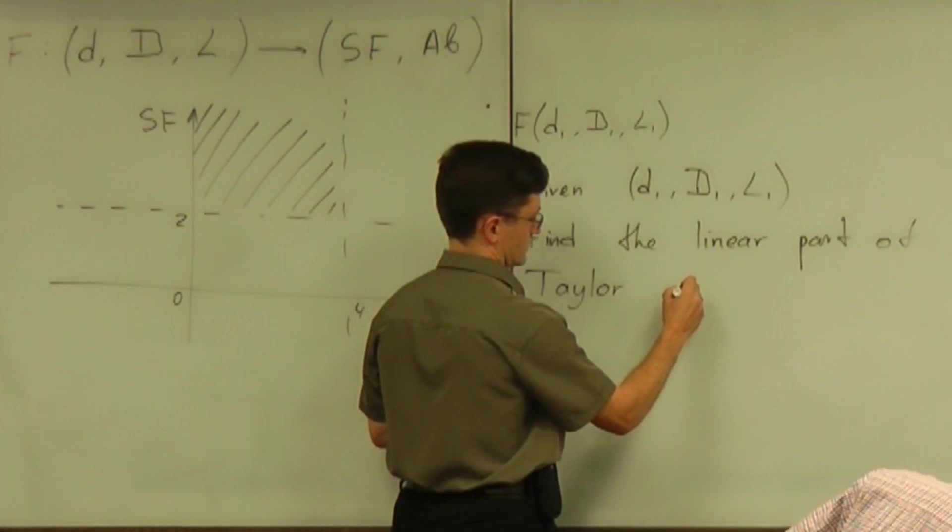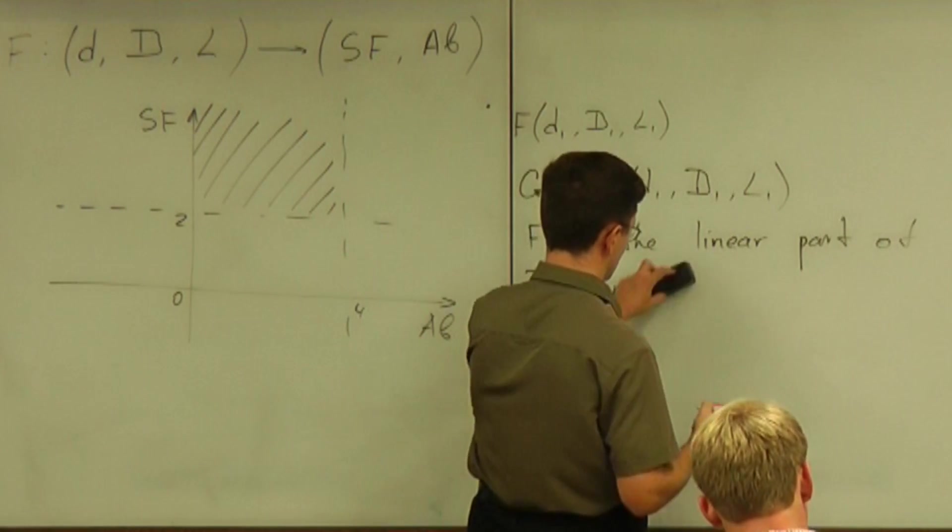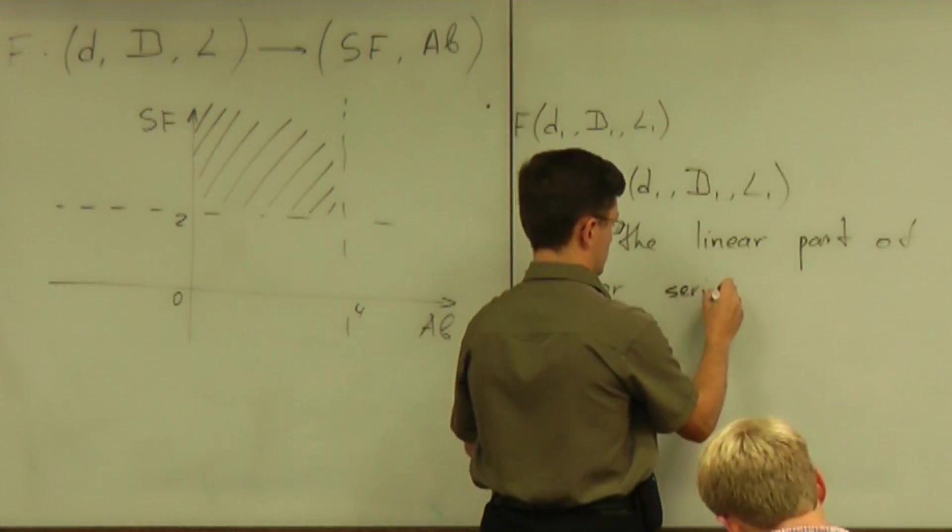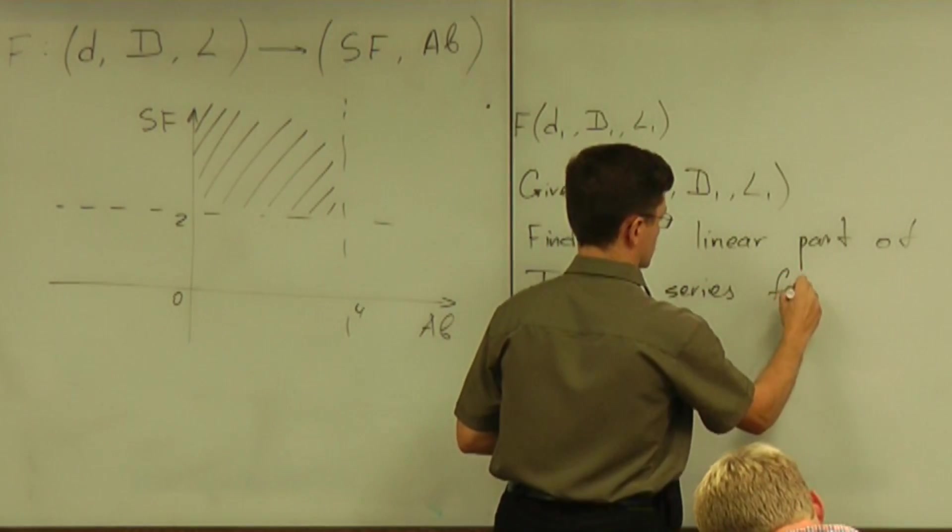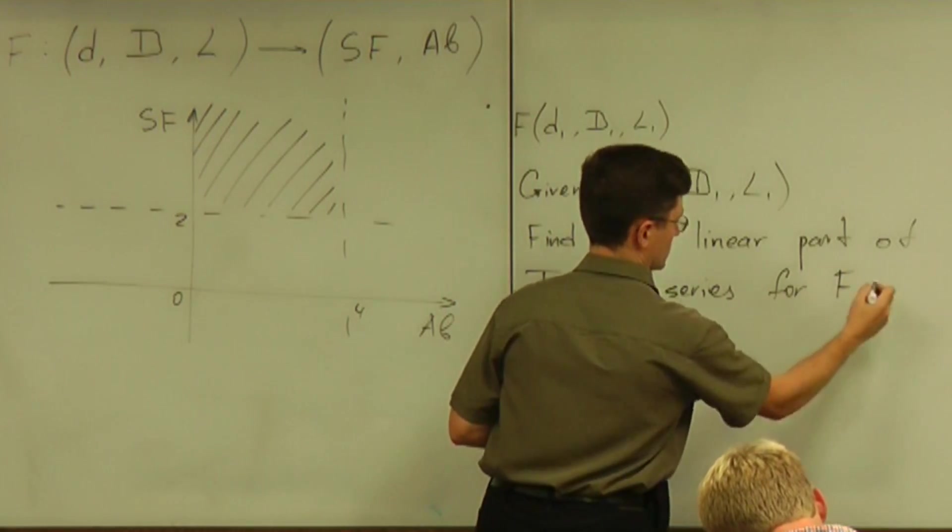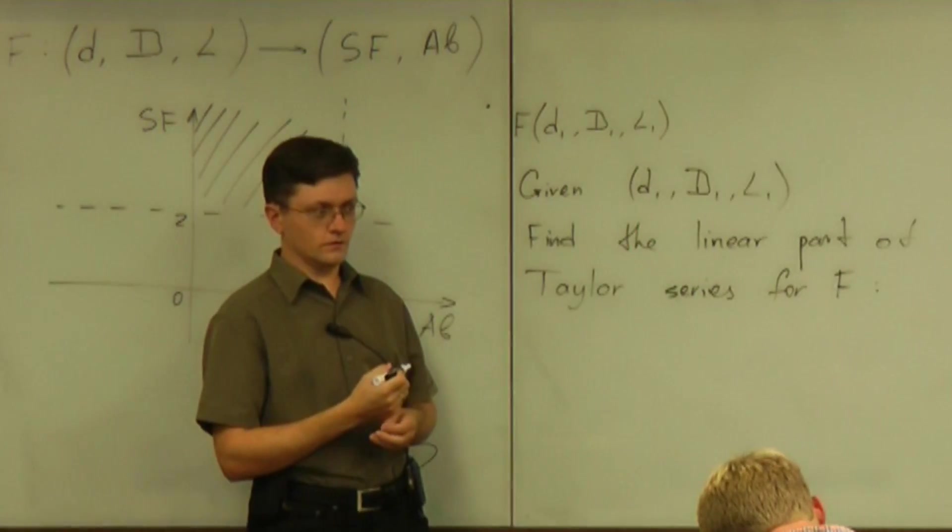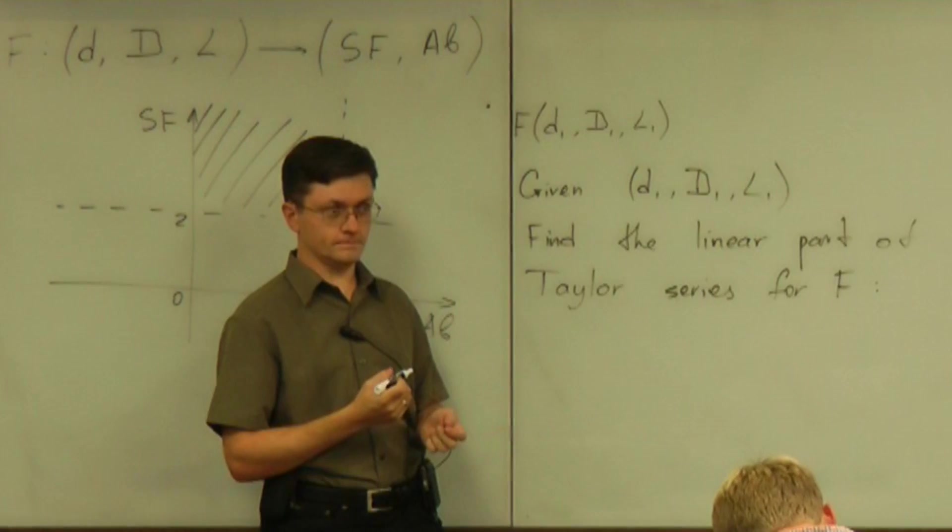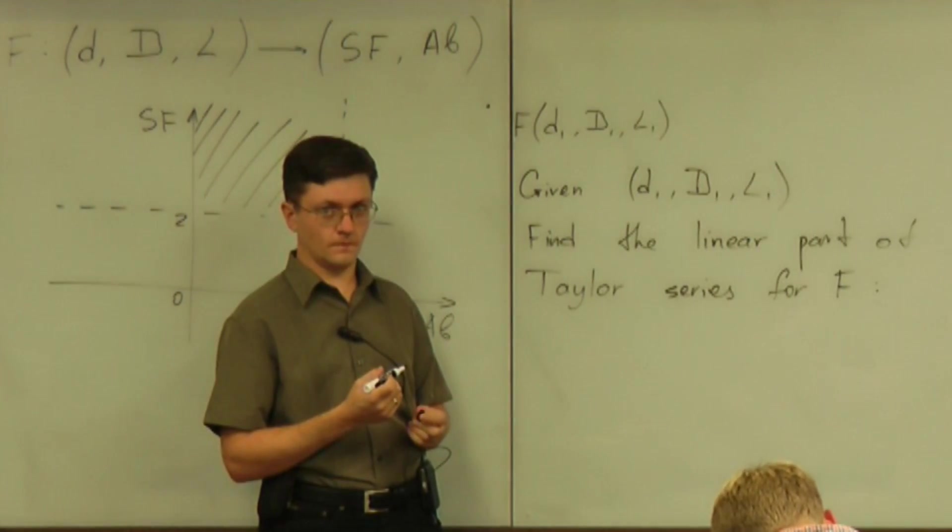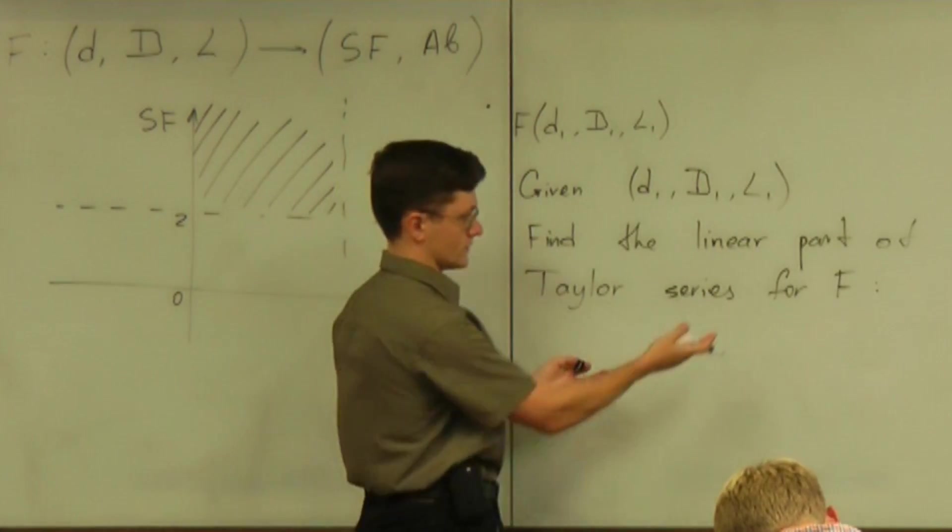Of Taylor approximation, well of Taylor series for F. Does that make sense? Can we write down Taylor series for that function? What should it be?